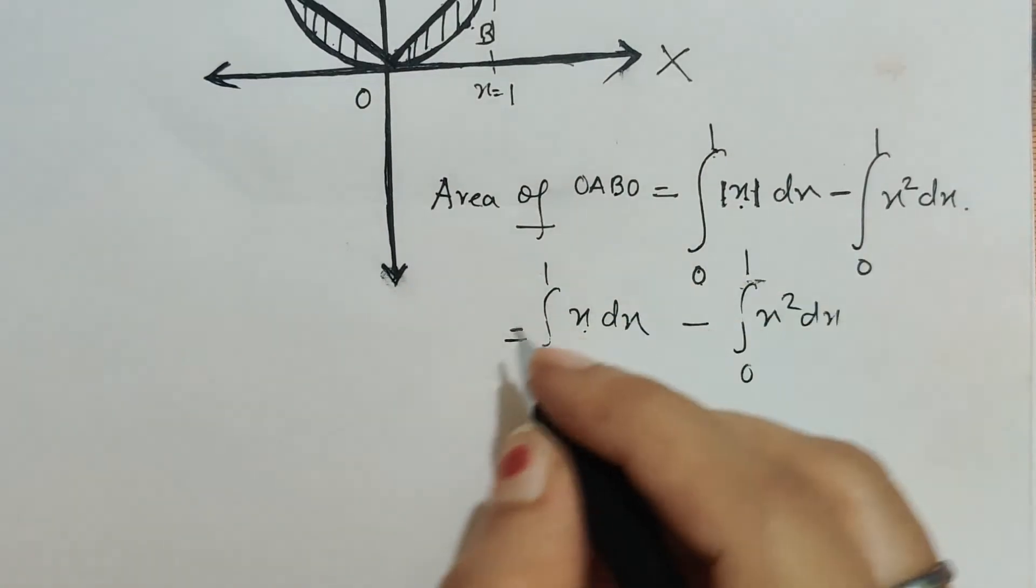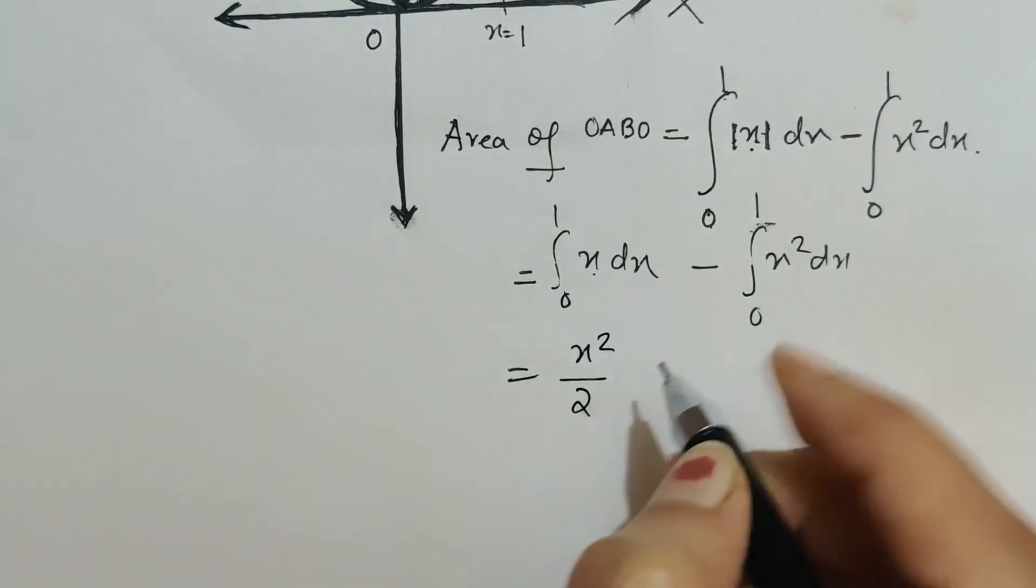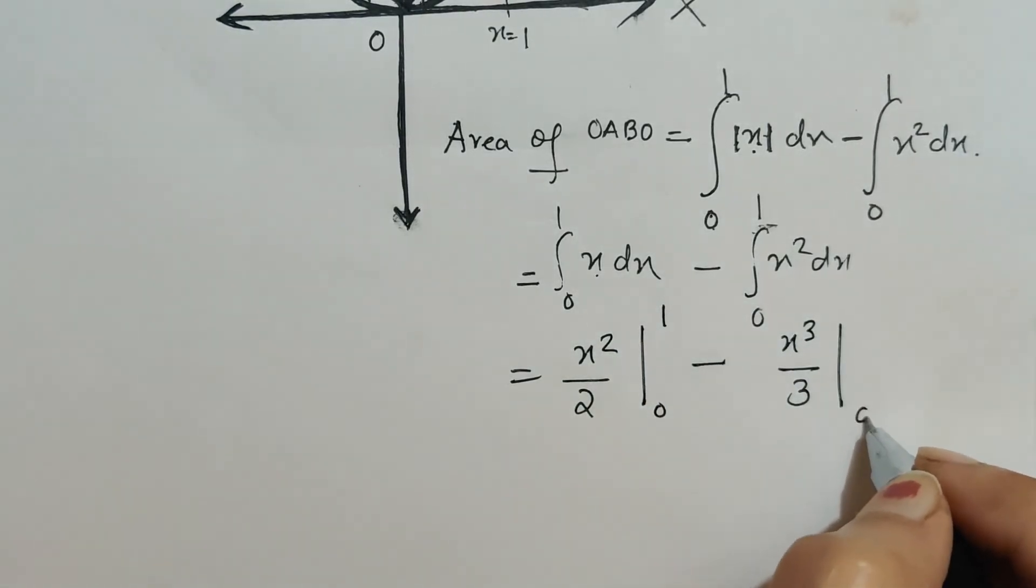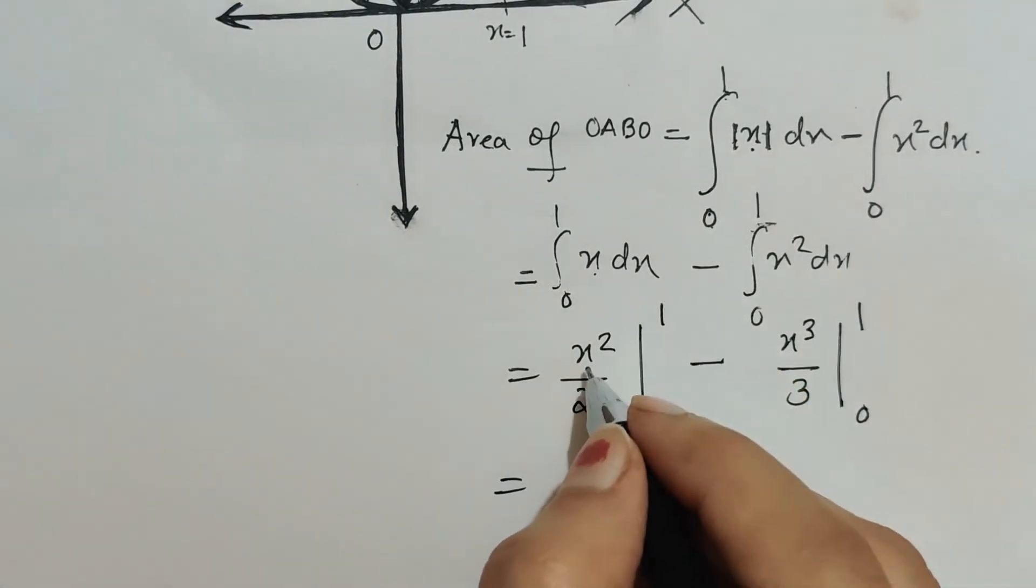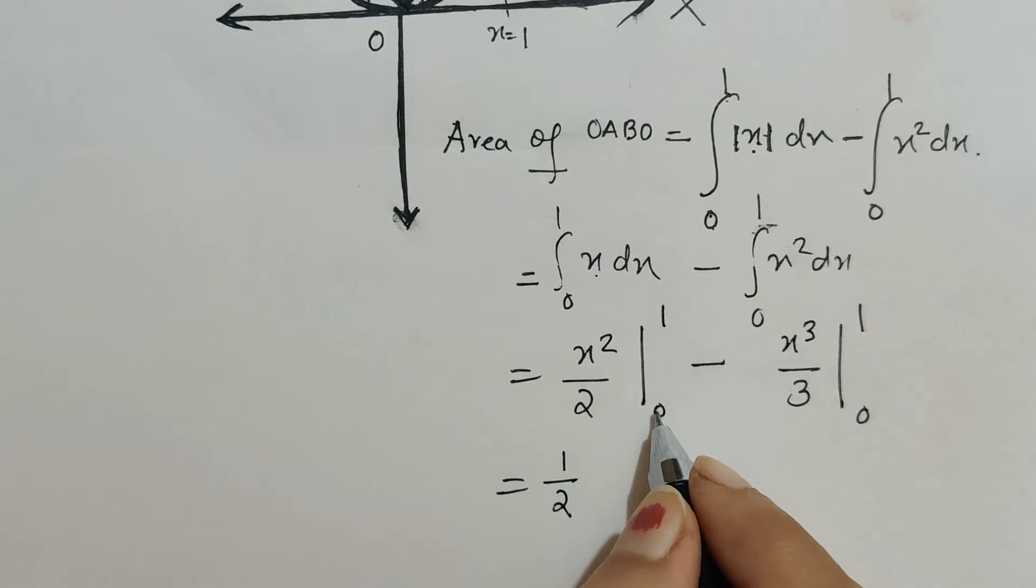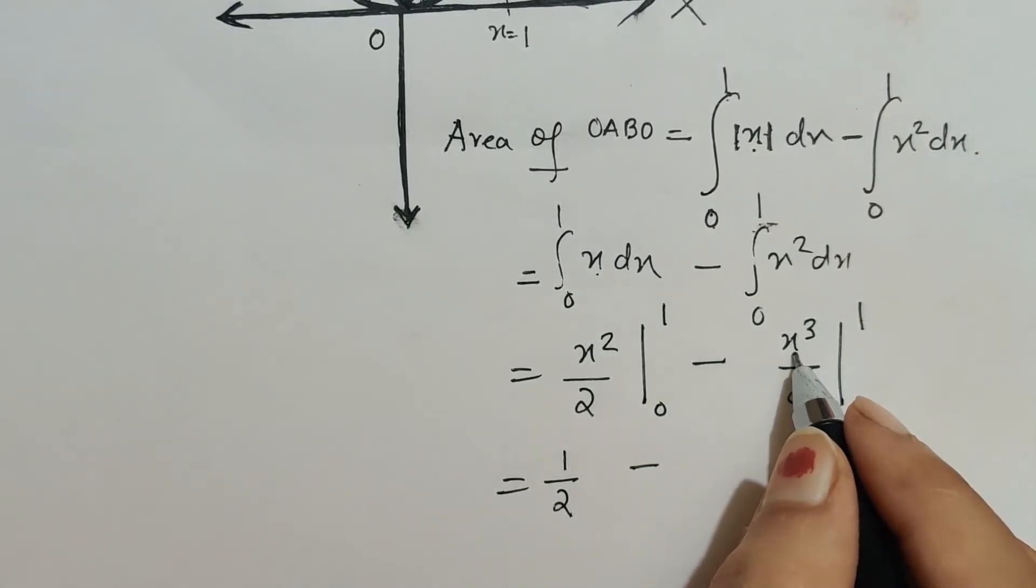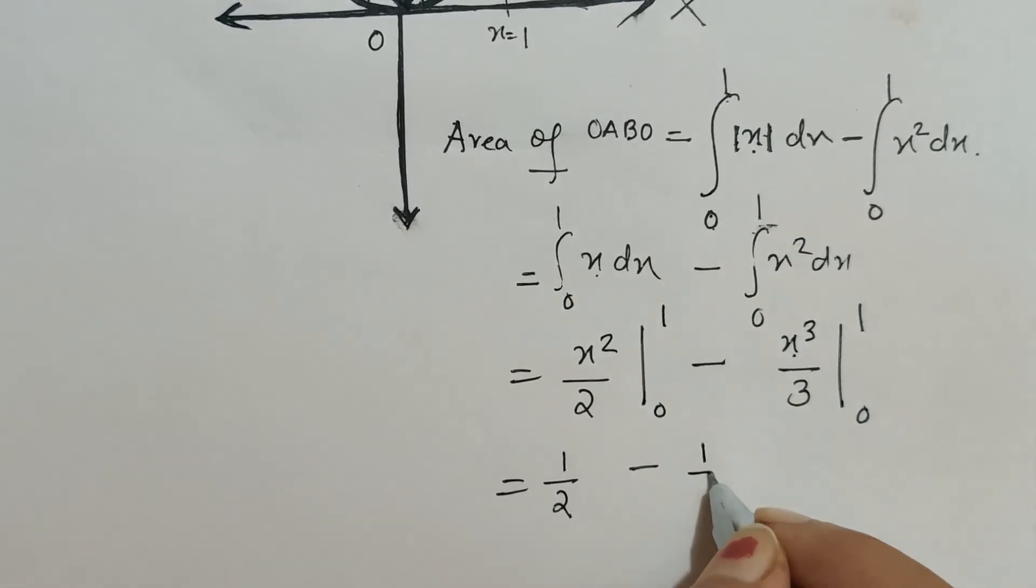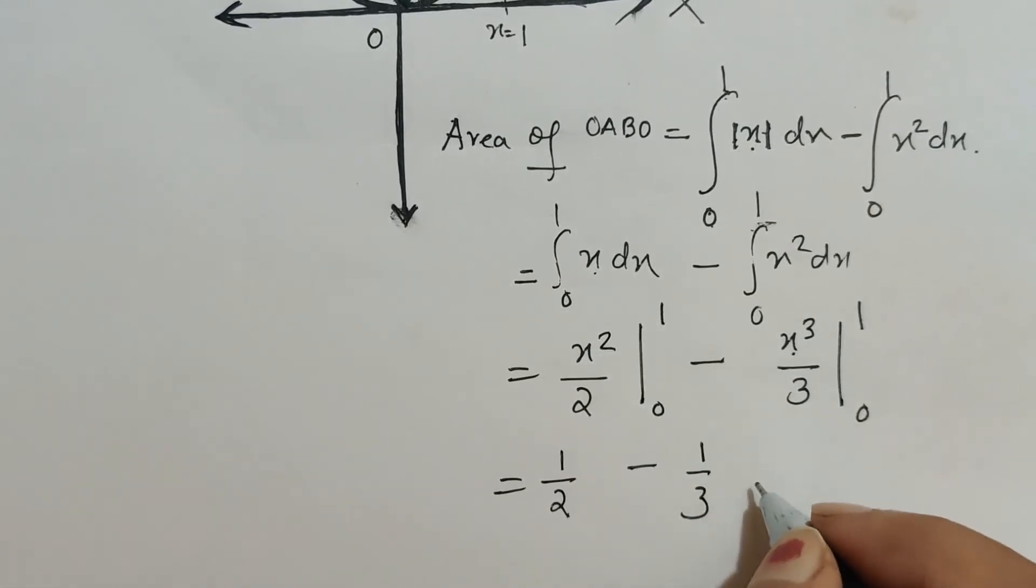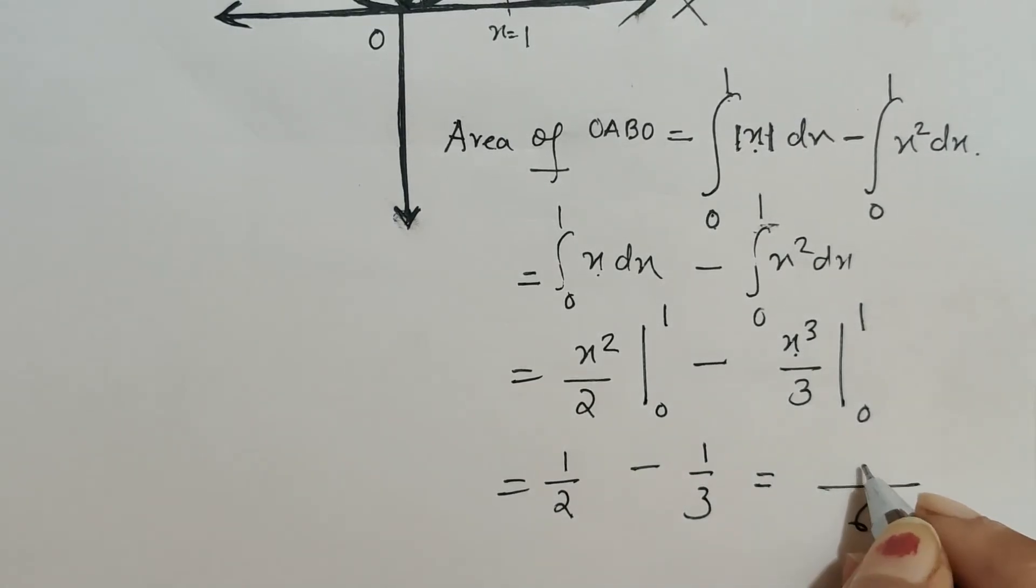Now let us integrate it. Simple integration: x dx is x square by 2 from the limit 0 to 1, minus x cube by 3 from the limit 0 to 1. Now if I put upper limit, it is 1 upon 2, and when I put lower limit it is 0. Minus, again put upper limit in this, so 1 cube is 1, so 1 upon 3, minus when I put lower limit it is 0 only. So 1 by 2 minus 1 by 3 gives 1 by 6.